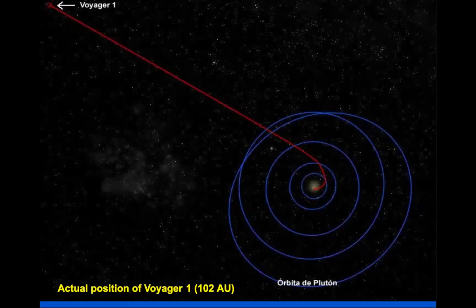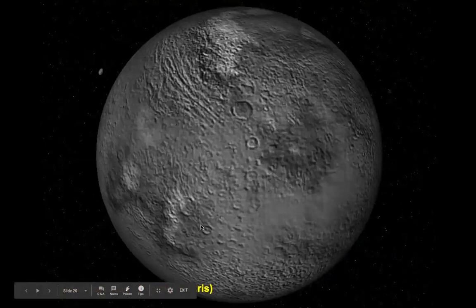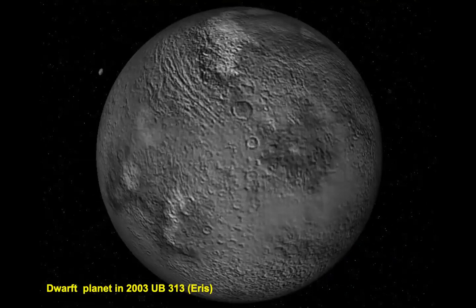Along the way, Voyager discovered a dwarf planet in 2003 — UB313 Aries. It looks like a moon, with bombardments from asteroids or other astronomical fragments during the formation of the solar system or even up to the Big Bang. It's very dry, approximately 2,500 kilometers in diameter.